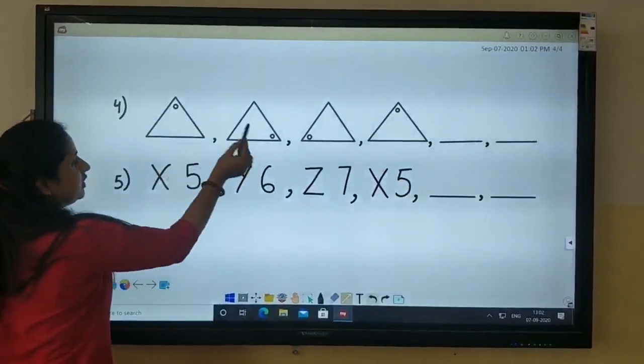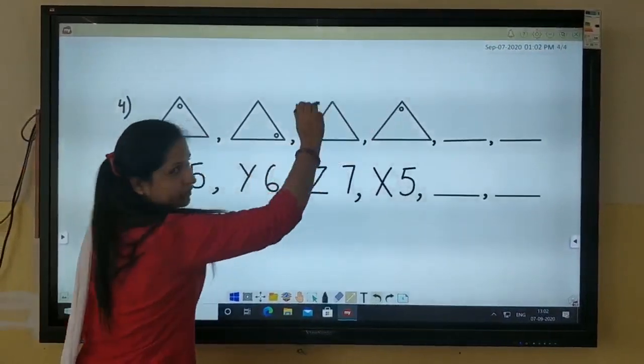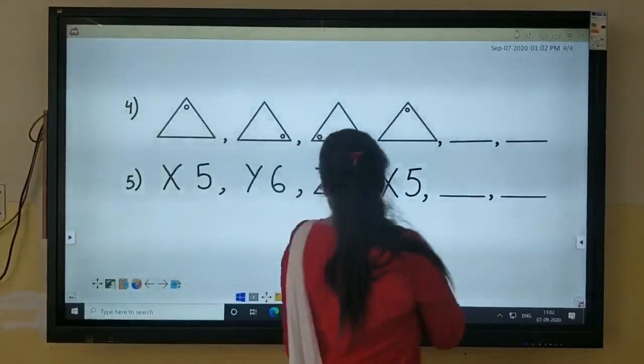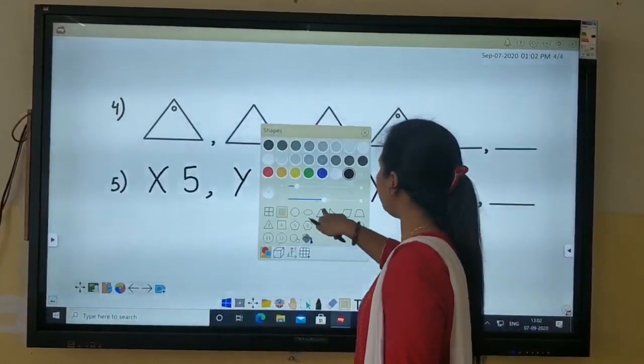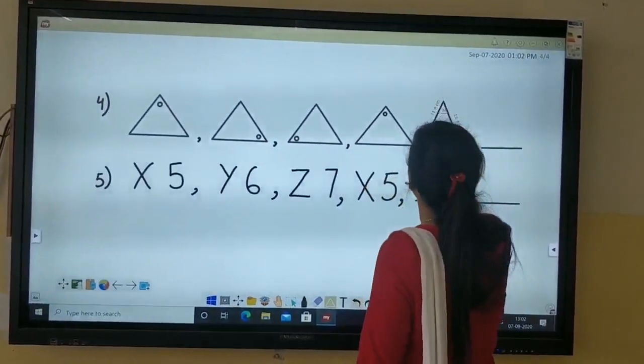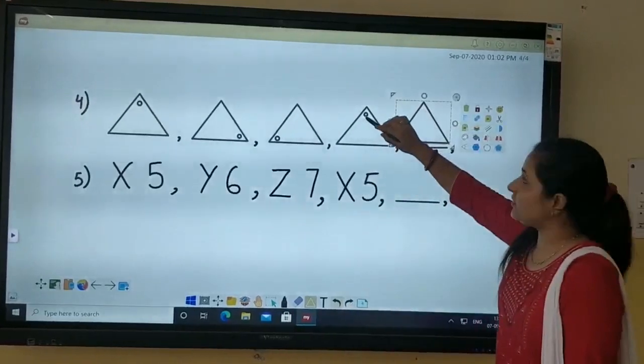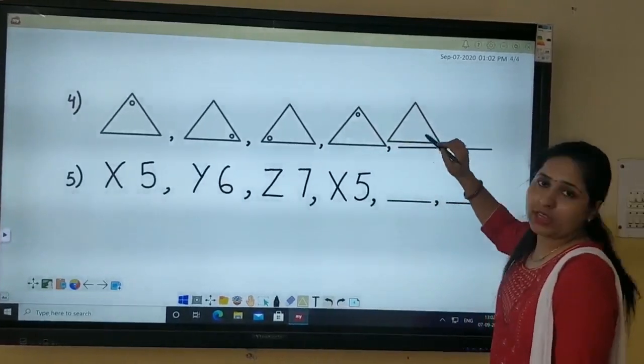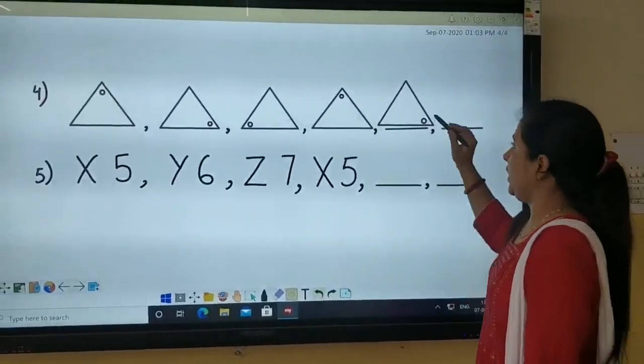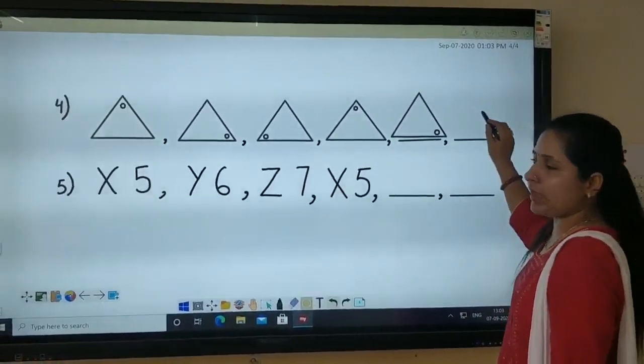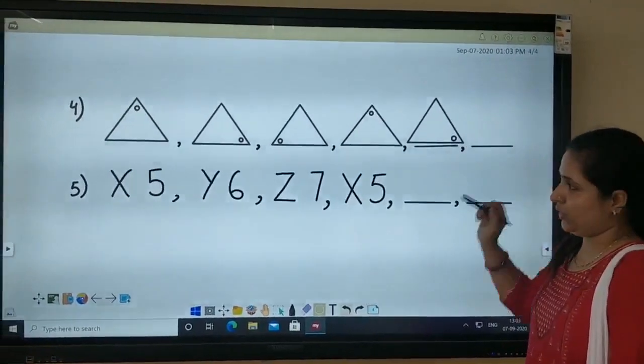Yes. One, two, three. Again here. So what will come next here students? You can see it would be again a triangle where the dot was here in the last one. So now it would be here. The circle or the dot. In the same manner you will draw the next triangle here and continue it.